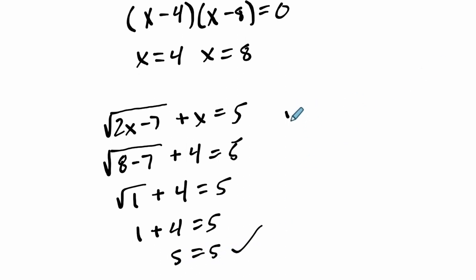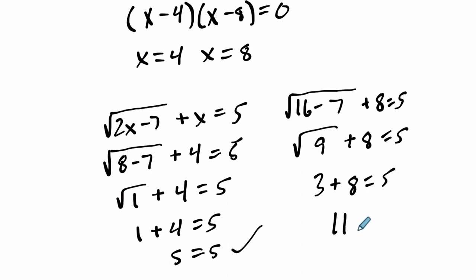What about 8? Let's try 8. I don't think it works. Let's just check. So you get the square root of 16 minus 7 plus 8 equals 5. 16 minus 7 is 9, so we have the square root of 9 plus 8, and that's not 5, is it? If we took the negative square root of 9, negative 3, it would work, but this implies a positive square root. So it's 3 plus 8 equals 5, and that's not true, right? 11 does not equal 5, so this is extraneous. It doesn't work. This is not true. So the answer is when x equals 4.